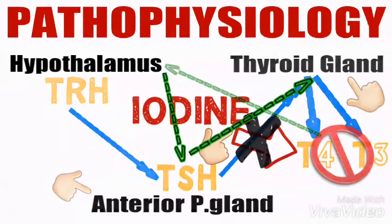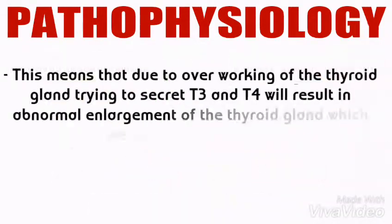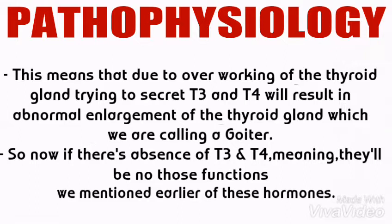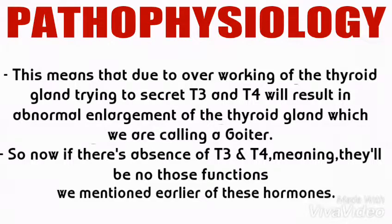But due to lack of iodine, unfortunately these hormones will not be secreted or able to perform their functions. This means that due to the overworking of the thyroid gland trying to secrete T3 and T4, it will result in abnormal enlargement of the thyroid gland — which we call a goiter. So if there is absence of T3 and T4, the functions of these hormones will be absent as well.